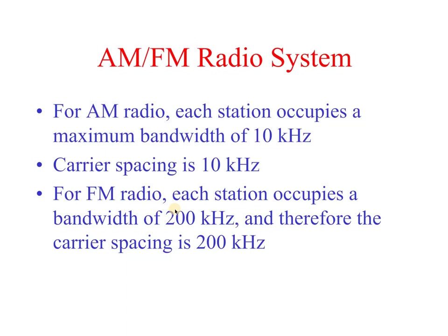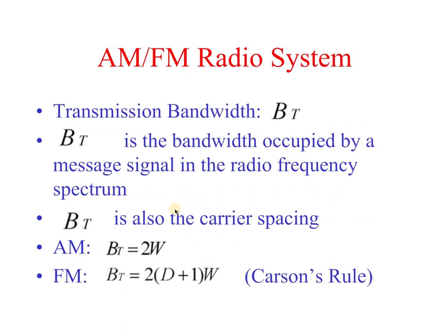Comparing AM and FM, FM occupies more bandwidth. Transmission bandwidth is the bandwidth occupied by the modulated signal in the radio frequency spectrum. For AM the bandwidth BT equals 2ω, and for FM the bandwidth BT equals 2(Δf + 1)ω, where Δf is the frequency deviation and ω is the maximum frequency of the modulating signal. According to Carson's rule we define BT for FM, but theoretically FM bandwidth is infinite.